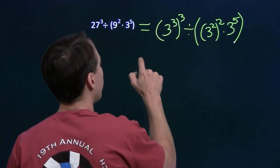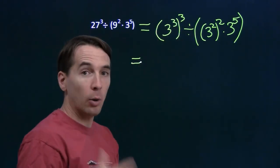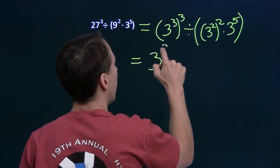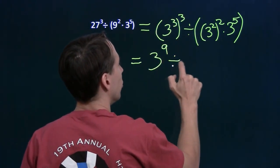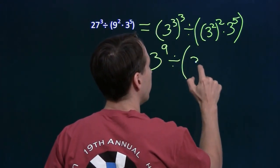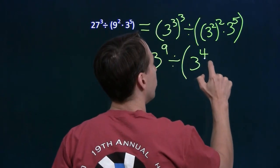So here we go. The cube of 3 cubed, well we know what to do there. Power of a power, we multiply the exponents. So 3 times 3 is 9. And we're going to do the same thing over here. 3 squared, the square of that. Again, we multiply the exponents. 2 times 2 is 4.